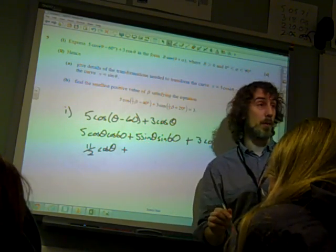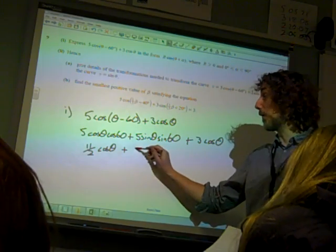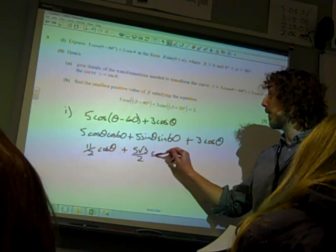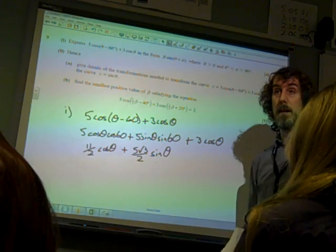And sin 60 is √3/2. So we've got 5√3/2 sin θ in there.